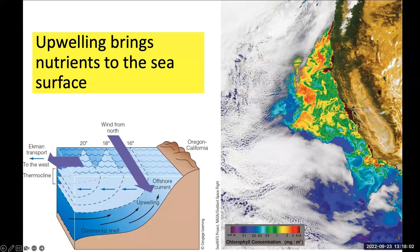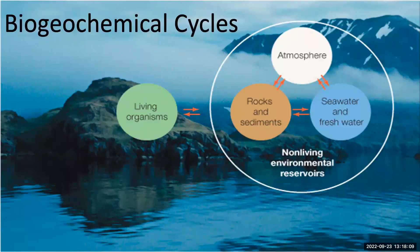The color bar indicates the concentration of chlorophyll in milligrams per cubic meter of seawater. Notice that the chlorophyll concentration is highest near the coast. This cycling of nutrients from non-living reservoirs — such as the water column, sediments, or the atmosphere — into the marine food web is referred to as the biogeochemical cycle.